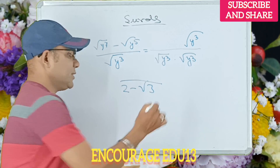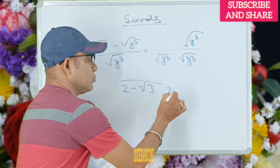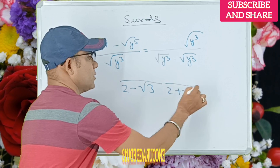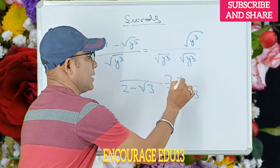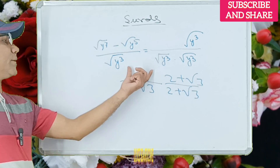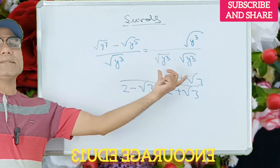Two plus root 3, through 1 through 2, multiply. Then 2 through 2.